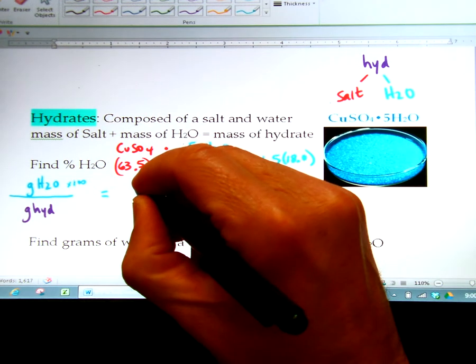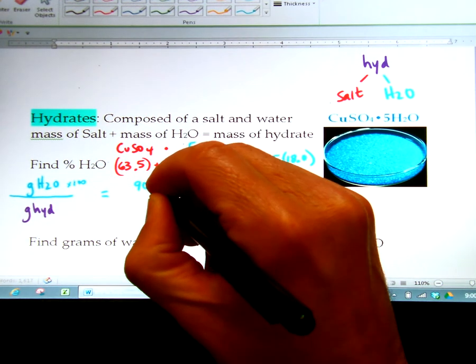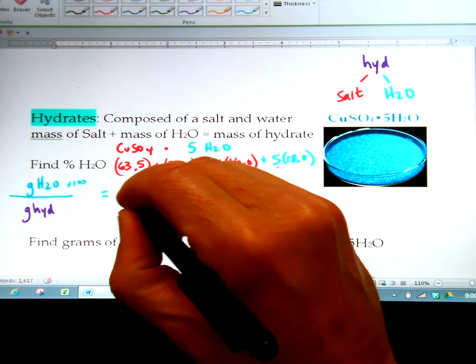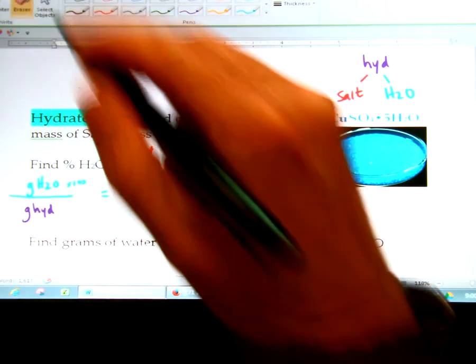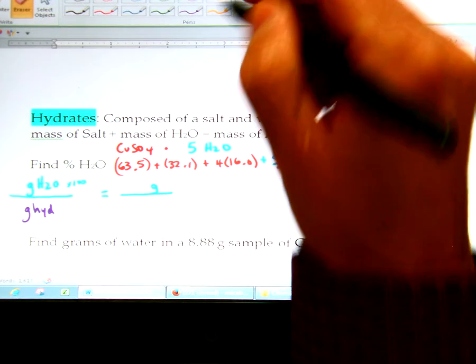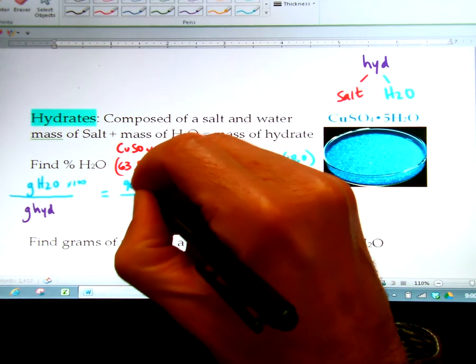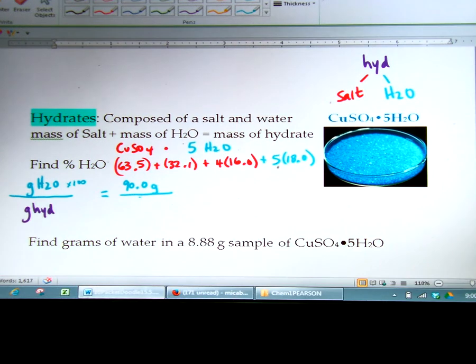So that's going to be 90 grams on top. Divided by, and with sig figs I'll just go to tenths because that's what I've been doing. So 90.0.